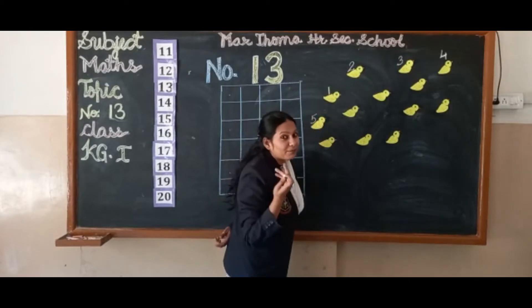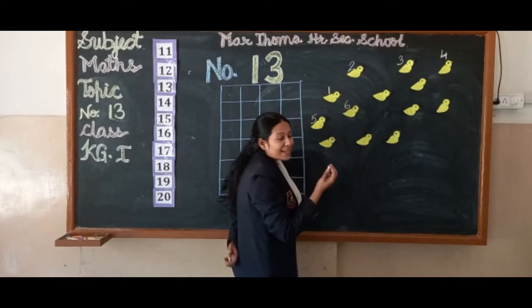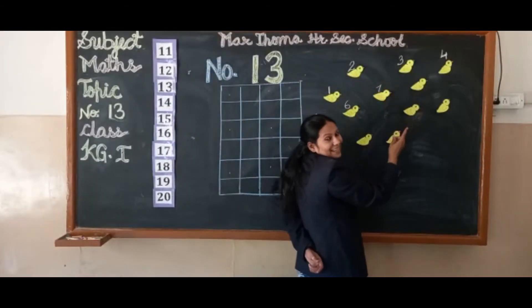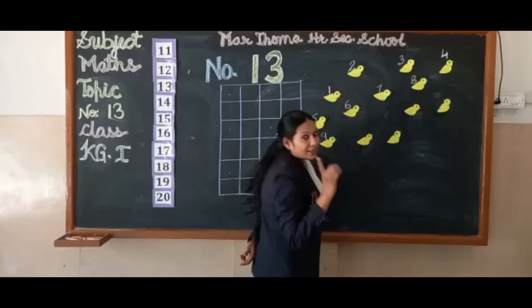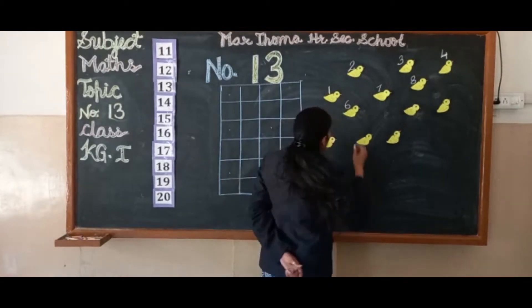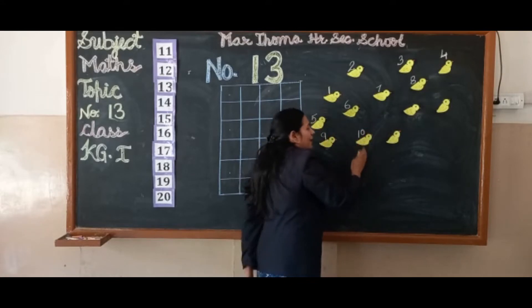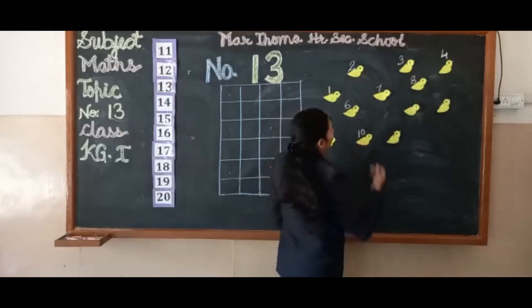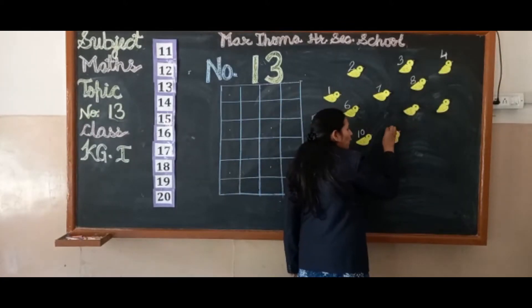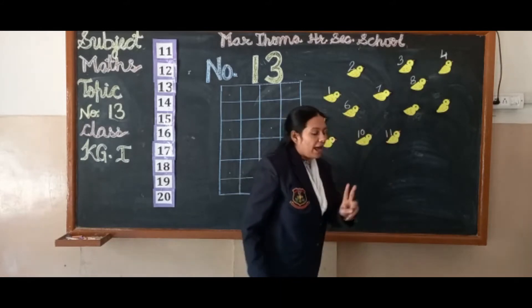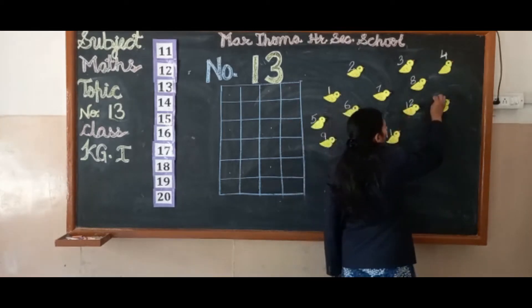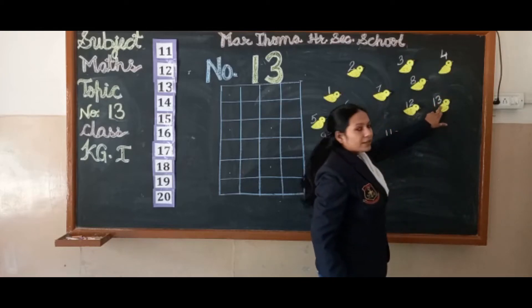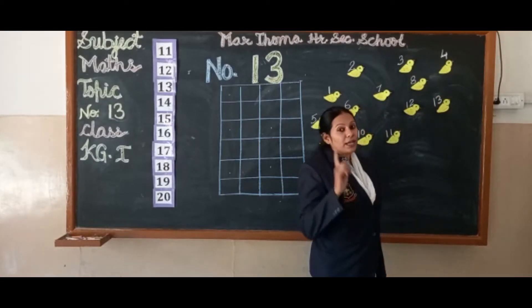After five, which number comes? Six. After six? Seven. Then number eight. Then number nine. After nine, which number comes? Yes — one and zero together make ten. After that the row changes — means number 11. One and one together make 11. One and two together make 12. One and three together make 13. And today's number is 13.